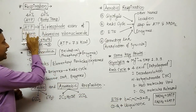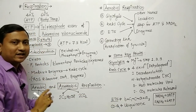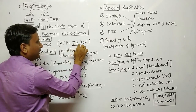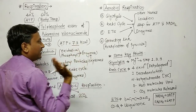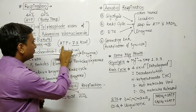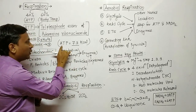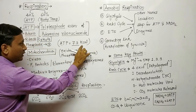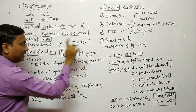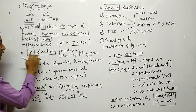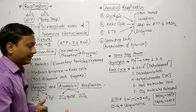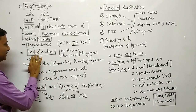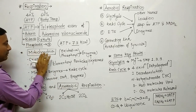On hydrolysis of ATP you get 7.3 kcal energy. So on hydrolysis of one ATP molecule it gives 7.3 kcal energy. This value is important. ATP is generated in the powerhouse of the cell, that is mitochondria.